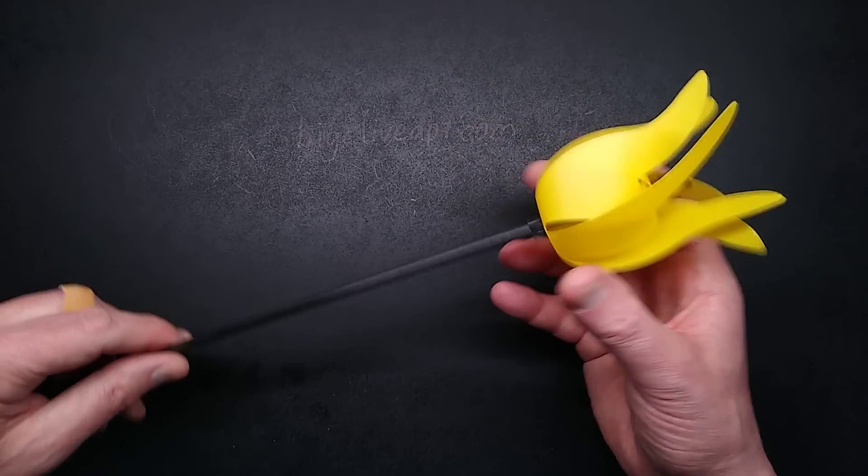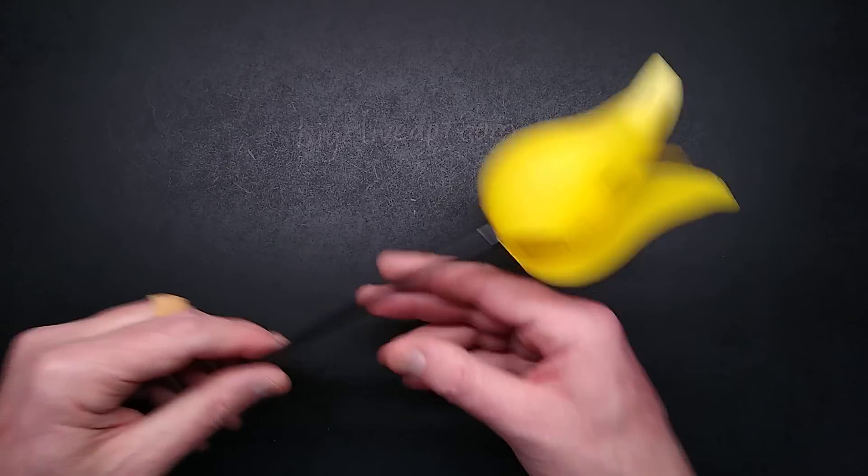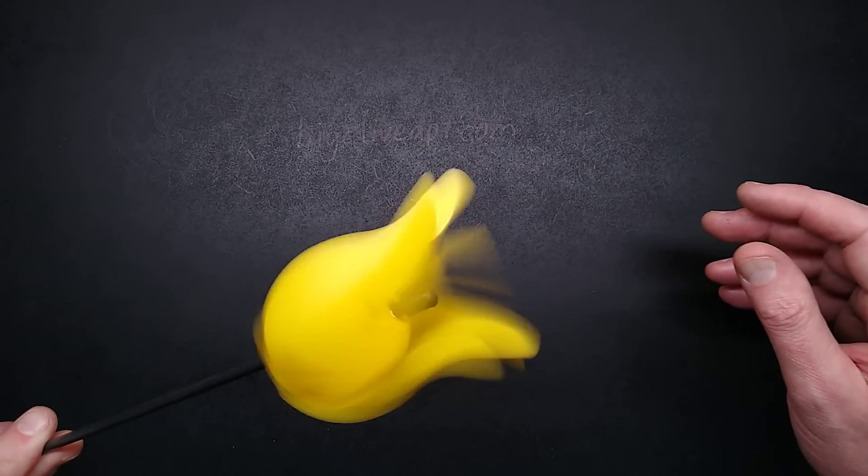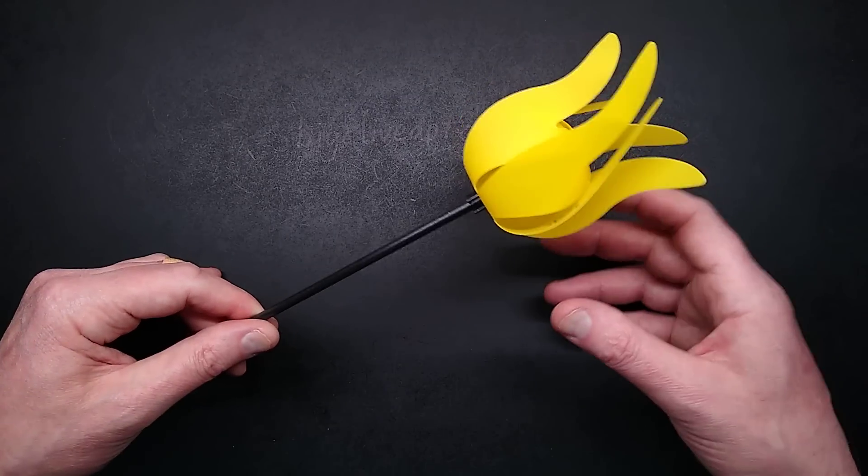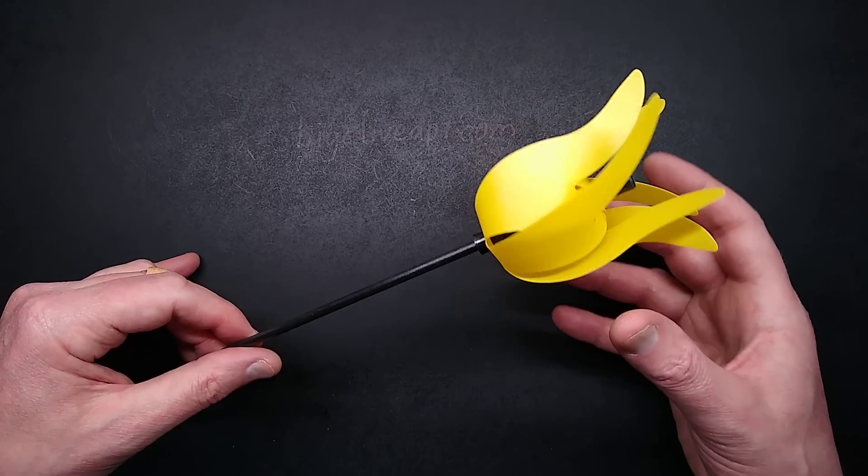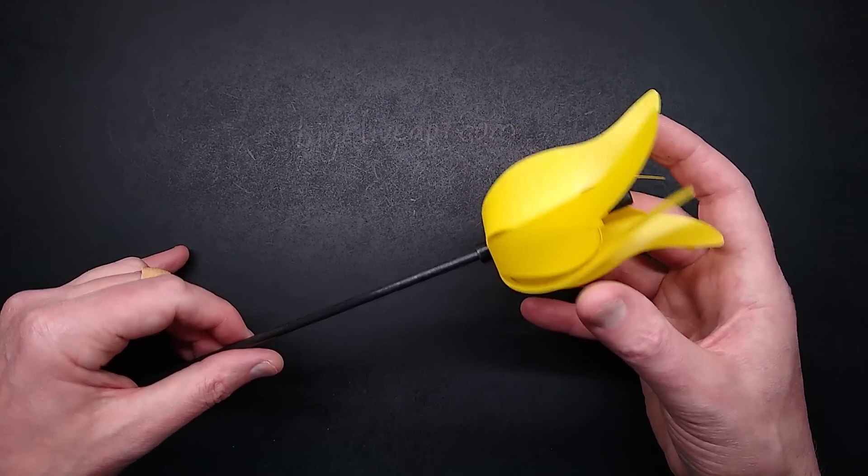I thought initially when I saw this in Poundland that this was a solar light, but in reality, if I blow in this, it turns out that their spinning tulip is a VAWT, a vertical axis wind turbine.